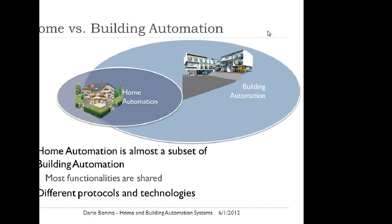They are not completely overlapping because there are certain functions in home automation not needed in building automation and vice versa — that's why they are drawn as two intersecting but not completely overlapping ellipses. However, working with the same approach for both building and home automation is supported by reality because they do overlap. So we can try to devise a single approach for both, and we need to understand what the differences are and what we need to do to tackle them.